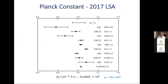Here were the results of the 2017 adjustment. At the time we had multiple measurements of h: several Watt/Kibble balance measurements, X-ray crystal density measurements (silicon sphere), and Avogadro project measurements. We put them all together and got a recommended value. That value — very close to the weighted average of the data — was taken as the exact value of the Planck constant in the new SI. The uncertainties went away and it became the exact value.